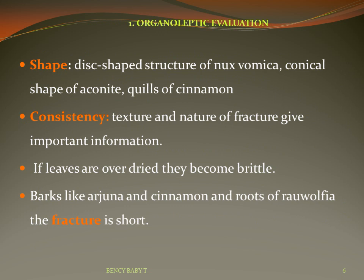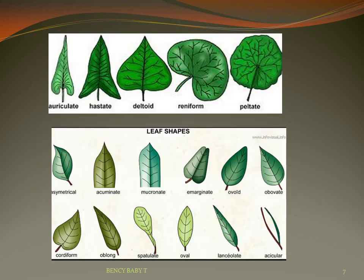Regarding shape: nux vomica is disc shaped, aconite is conical, and cinnamon and cinchona are available in the form of quills. For consistency, texture and the nature of the fracture give important information. Overdried leaves become brittle, and barks like arjuna, cinnamon, and roots of Rauwolfia have a short fracture. Leafy drugs can be identified by leaf shape and arrangement. Common shapes include oval, lanceolate, elliptical, and linear. Leaf arrangements include compound leaves — pinnately, palmately, or double compound.